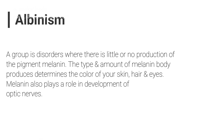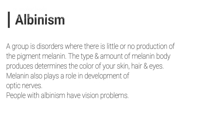Albinism is a group of disorders wherein there is little or no production of pigment melanin. The type and amount of melanin the body produces determines the color of your skin, hair and eyes. Melanin also plays a role in development of optic nerves.